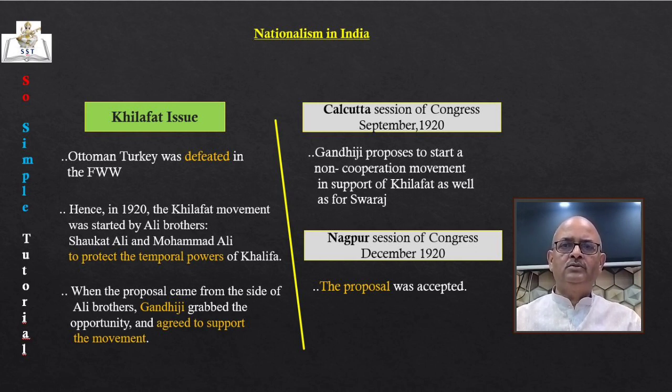In the early 1920s, a militant guerrilla movement started in the Gudem hills of Andhra Pradesh after the implementation of the Forest Act. The tribals were prevented from entering forests to graze cattle or collect fruit and firewood — a threat to their livelihood. The government also forced them to do Begar for road construction. The hill people revolted, attacking police stations, attempting to kill British officials and carrying out guerrilla warfare for achieving Swaraj.